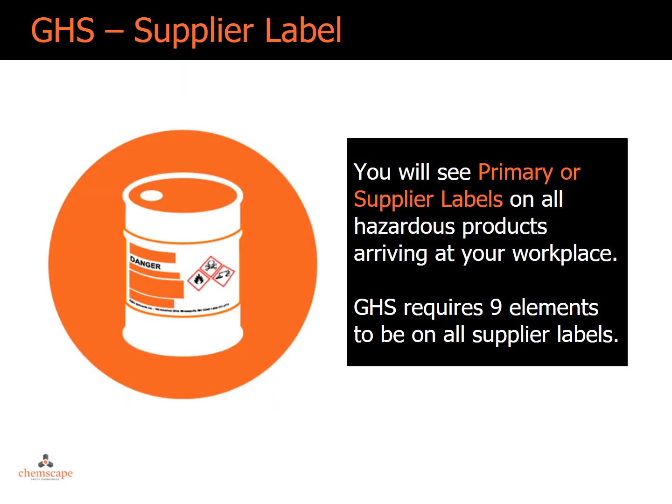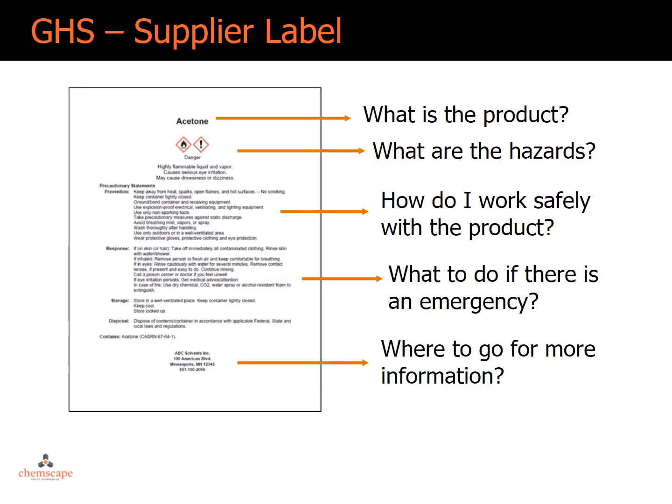You will see GHS labels on all hazardous products arriving at your workplace. GHS requires nine elements to be on all primary or supplier labels. A label can answer the five fundamental questions you need to know to work with a product. What is the product? What are the hazards?